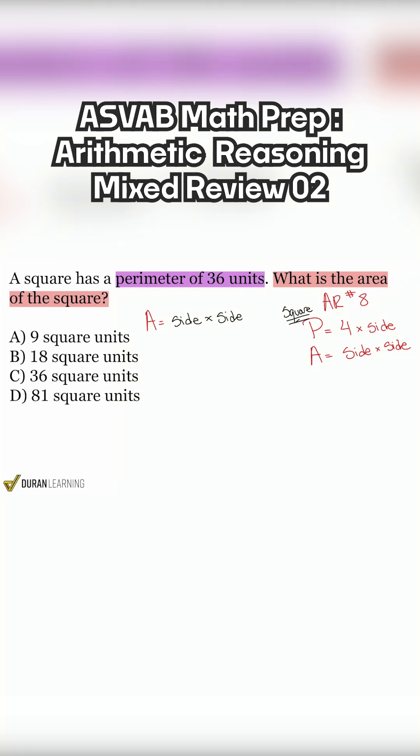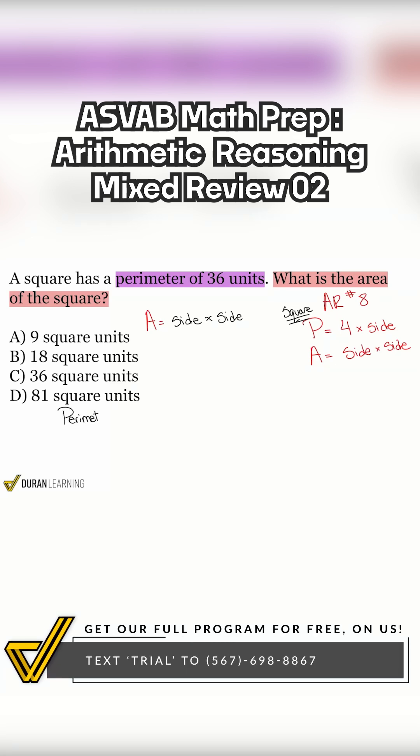Everybody, let's ask ourselves with the perimeter, let me write this over here. With the perimeter being 36 units, can we use that to get to the side? Can we use that? Yeah, the answer is absolutely.